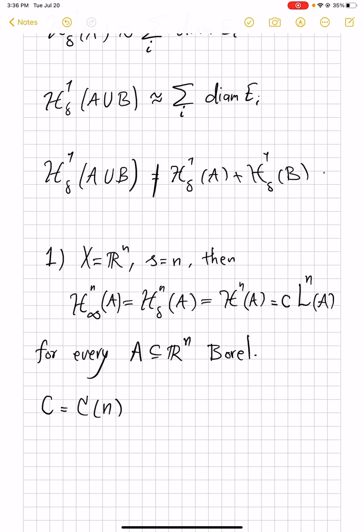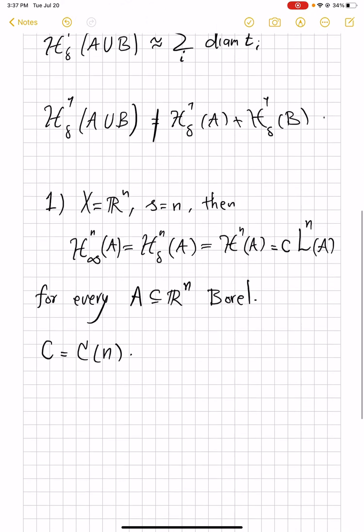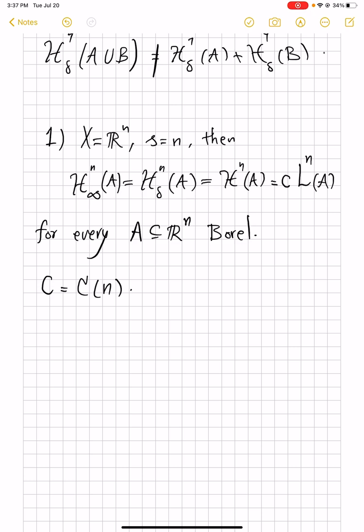The constant C is a constant that only depends on n, and it's actually a calculable one. In some textbooks, they do include this constant in the very definition of H^n, so that H^n ends up being equal to L^n. That means you make this constant C equal to 1 by absorbing it into the definition of H^n. And that's a convention that we will actually take when we switch to study of the Euclidean sets. In that case, we wish to have H^n actually equal to L^n without any fixing constant.